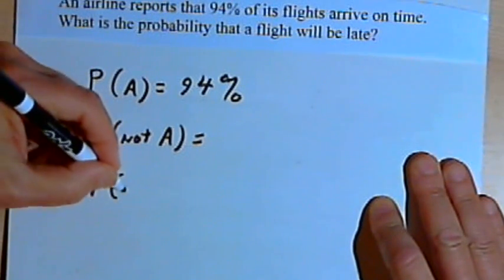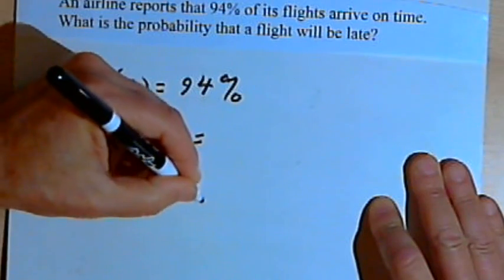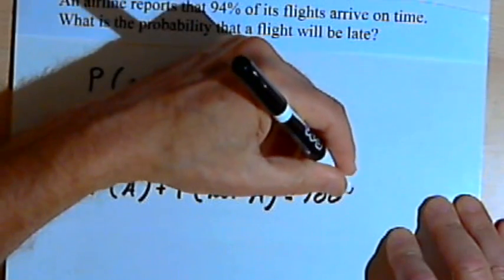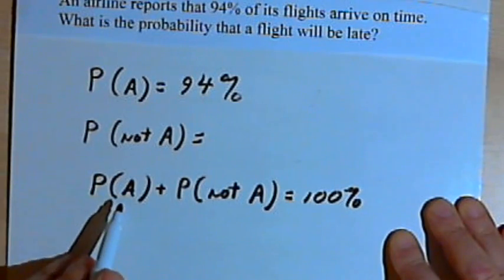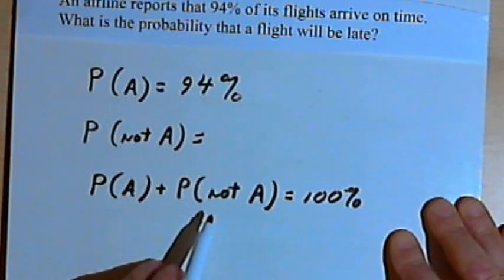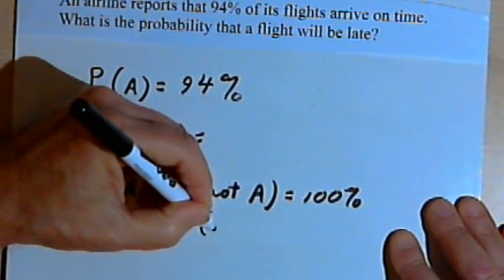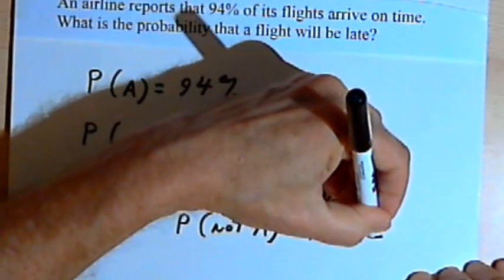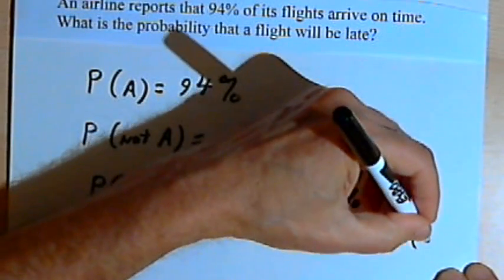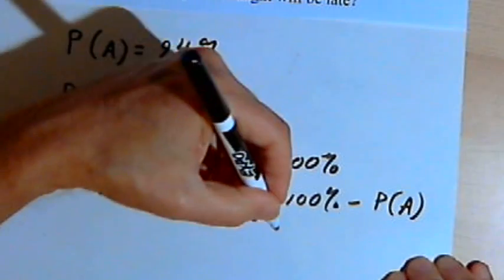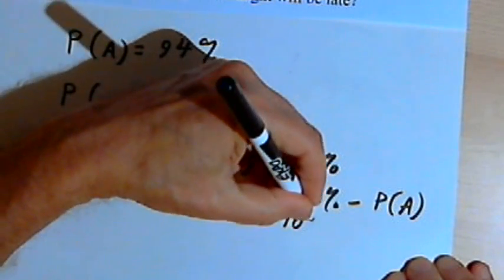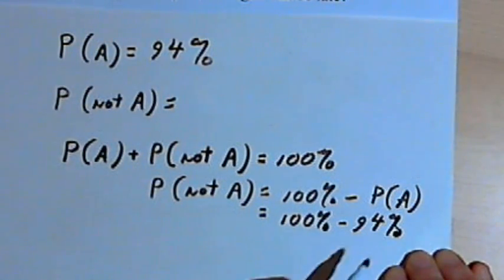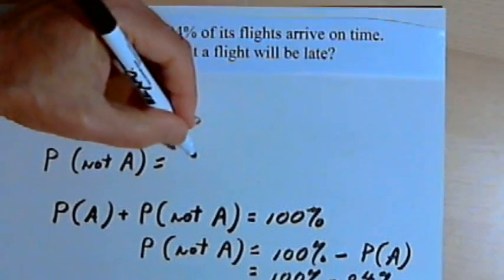So the probability of A plus the probability of not A is equal to 100%. If I take that equation and subtract the probability of A from both sides, the probability of not A equals 100% minus the probability of A. The probability of A is 94%, so the probability of not A equals 100% minus 94%, which is 6%.